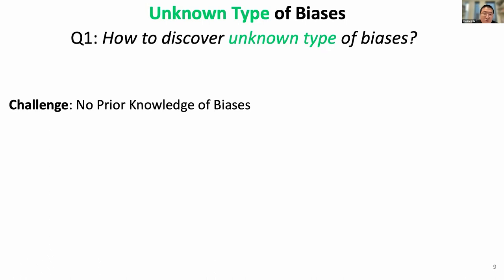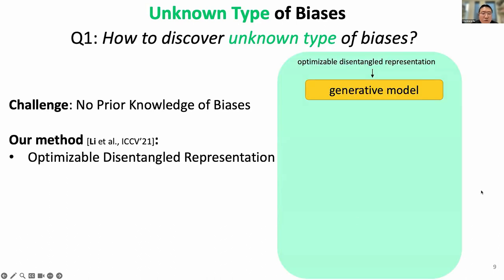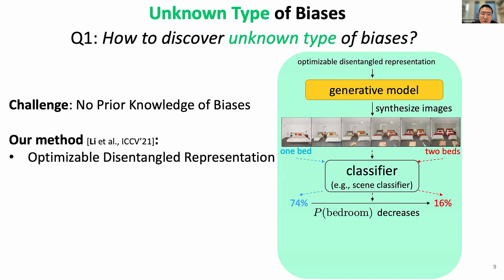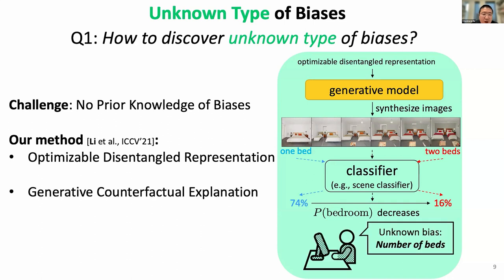This is an extremely challenging research problem because there is no prior knowledge of the biases. In the following of my talk, I'm going to introduce two works. The first work is published as an ICCV 2021 paper, where we model the bias with a generative model. Under a generative model, we synthesize images — for example, for a bedroom classifier, we synthesize bedrooms with different properties, like gradually changing from one bed to two beds. We found that this affects the classifier's prediction. In other words, our model is able to generate counterfactual explanations, and then show them to humans to identify the bias type.